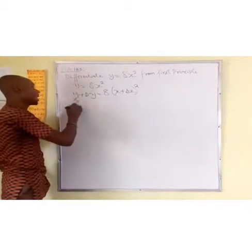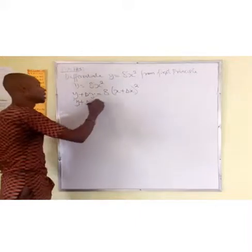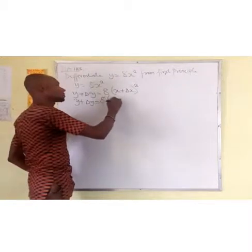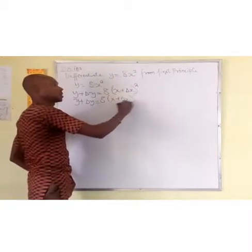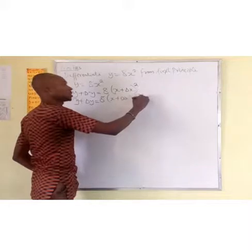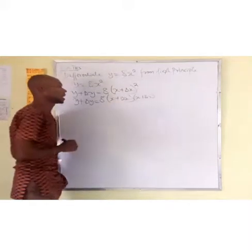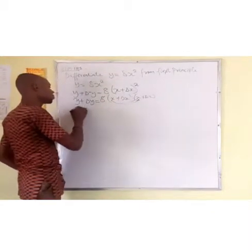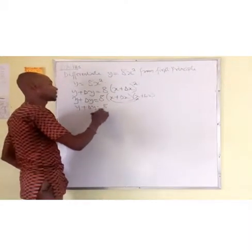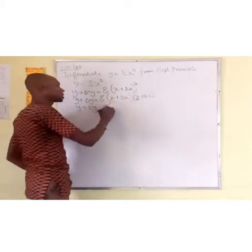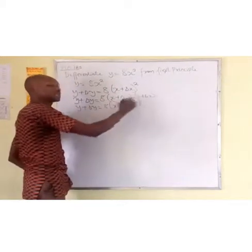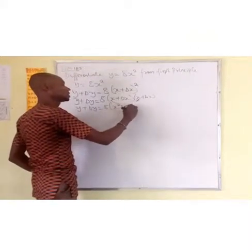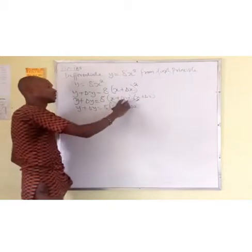We are going to have y plus Δy equal to 8. We come to expand these brackets. We have x plus Δx, multiplied by x plus Δx, which equals y plus Δy equal to 8 times (x squared plus x·Δx plus Δx·x plus Δx squared).